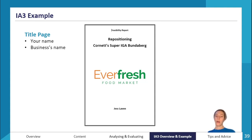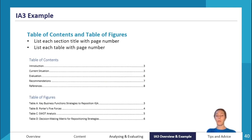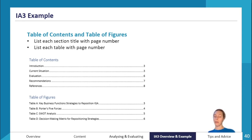First, you need a title page in your report. This falls under the communication criterion — you'll see in the criteria sheet that formatting needs to be correct. Include your name, the business's name, and sometimes the logo. Try to make it look professional. On your next page, include a table of contents and a table of figures if applicable. List each section title with the page number — you can automatically generate this in Word, Google Docs, or similar software.